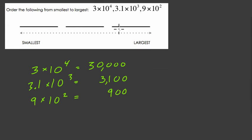So we can then write our answer down. We have 3 times 10 to the 4th, which I'll write as 3e4. It means same thing, 3 times 10 to the 4th. Then we have 3.1e3. And then 9e2.